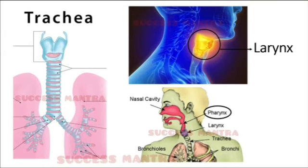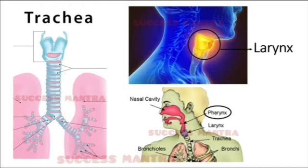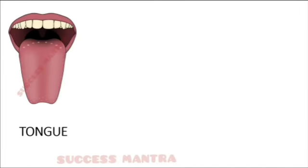The pharynx is a membrane-lined cavity present behind the nose and the mouth. It connects the larynx and esophagus, that is the food pipe. Next is the tongue, which also plays a key role in speech production.